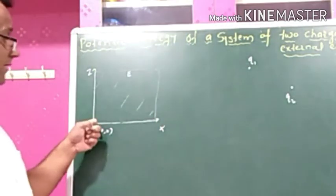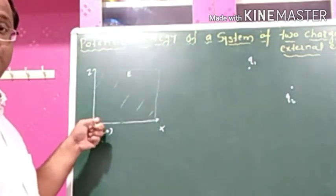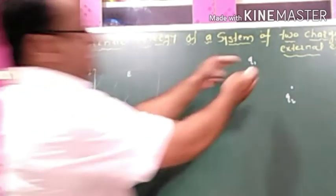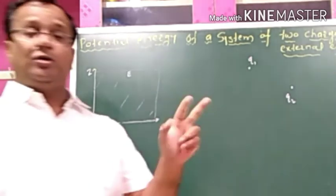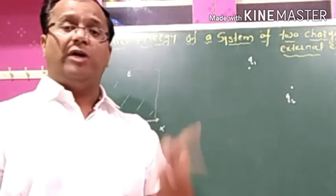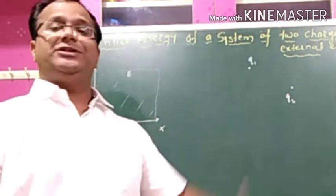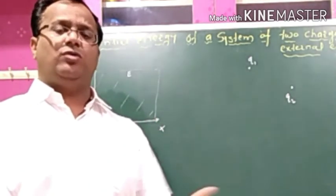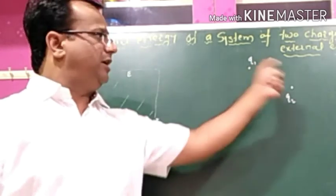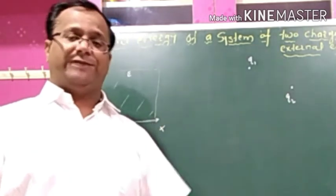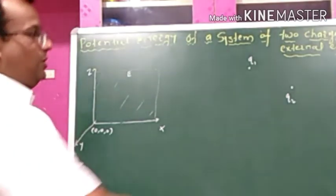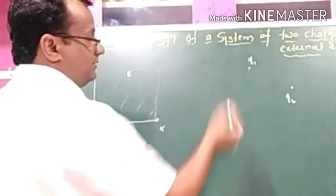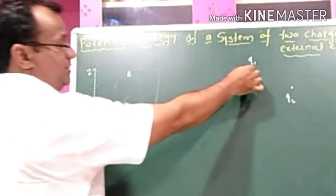These two charges are placed at an infinite position from this system, and the distance between these two charges is also infinite. That is why no force is produced between these two charges and no work is done between them at the infinite position.